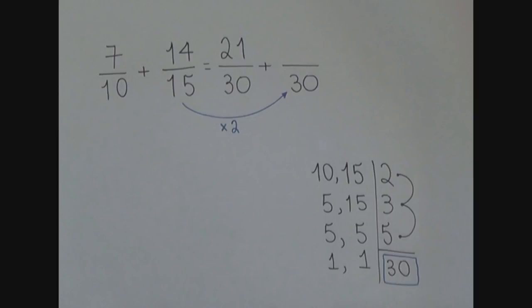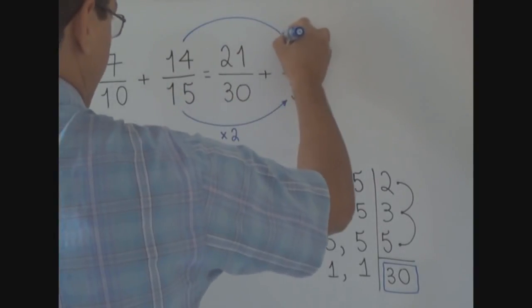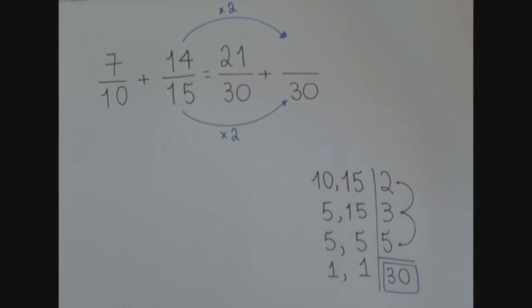If it is easier for you, you can just think that 30 divided by 15 equals 2. So, if the 15 was multiplied by 2, the 14 is also going to be multiplied by 2. So, we can find the new numerator.